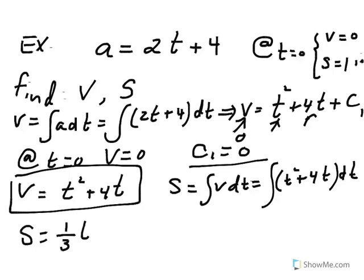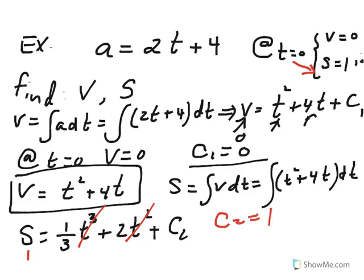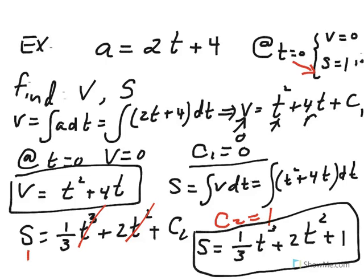To find position, we integrate velocity. Integrating t squared plus 4t with respect to time gives s equal to one-third t cubed plus 2t squared plus a constant c2. Using the initial condition that at t equals 0, s equals 1, we plug in and get c2 equals 1. So position is s equals one-third t cubed plus 2t squared plus 1.